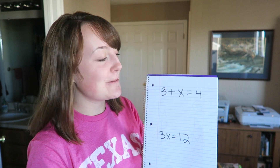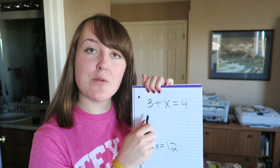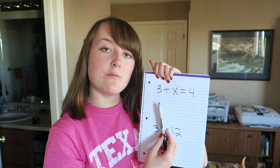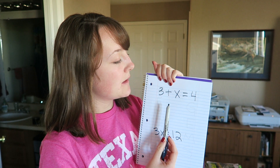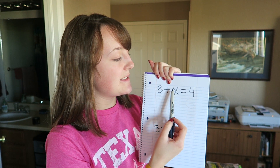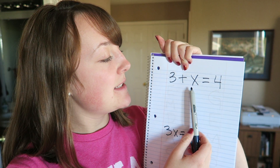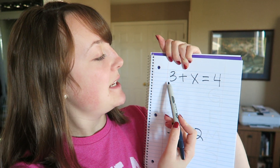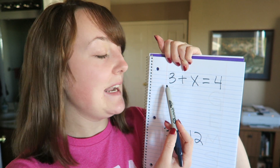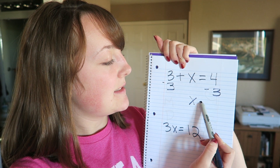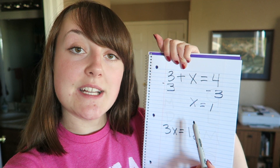I'm gonna teach you the first thing you need to know when doing algebra, and that is solving for X. So in Example 1, you see an X — what does X equal? You do the opposite of whatever the equation is doing. Since we're adding 3, we're gonna subtract 3 from both sides. Subtract 3, and X is equal to 1. And that is your final answer.